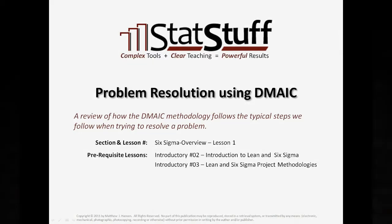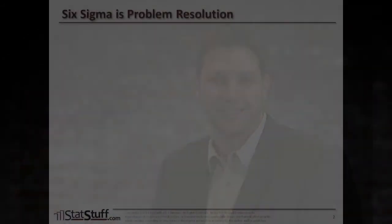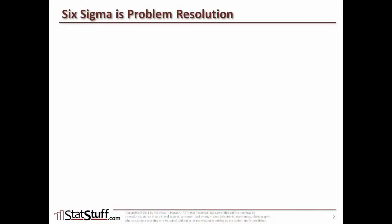There are just a couple of prerequisite lessons that may help with some of the terms and concepts that I use within this lesson, so it may be helpful to check those out first. Let's begin by describing the five basic steps we generally follow when resolving a problem. Six Sigma is best known as a formal methodology for how we're trying to resolve problems.